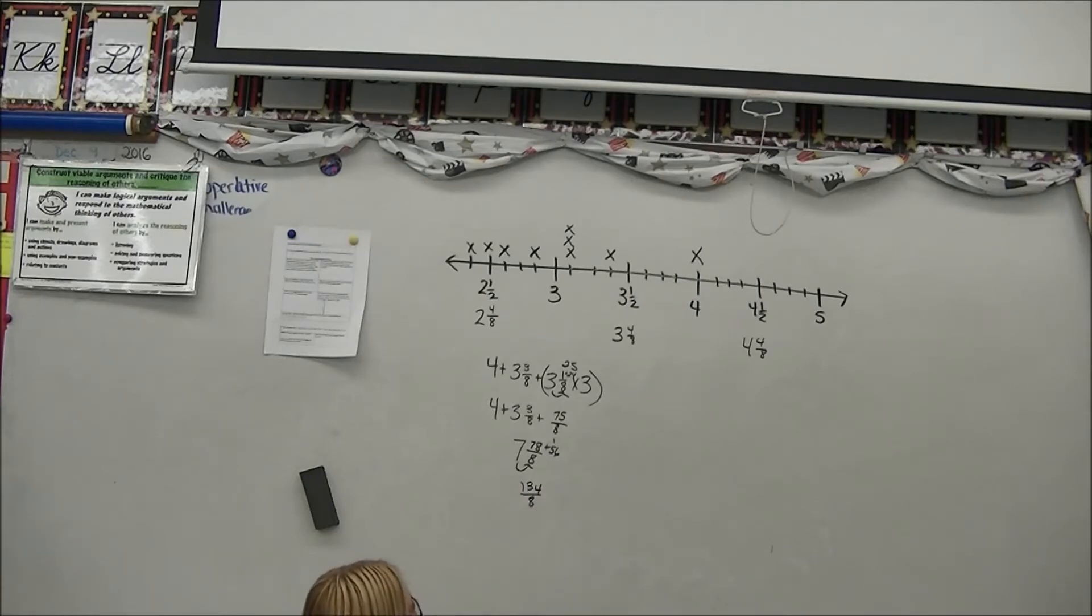And now what I'm going to do is I'm going to divide that by 5 data points. Now I know the rule for dividing is going to be keep, change, and flip. So I'm going to keep this at 134 eighths. And I'm going to multiply it by 1 fifth which is my reciprocal. So this becomes 134 fortieths.